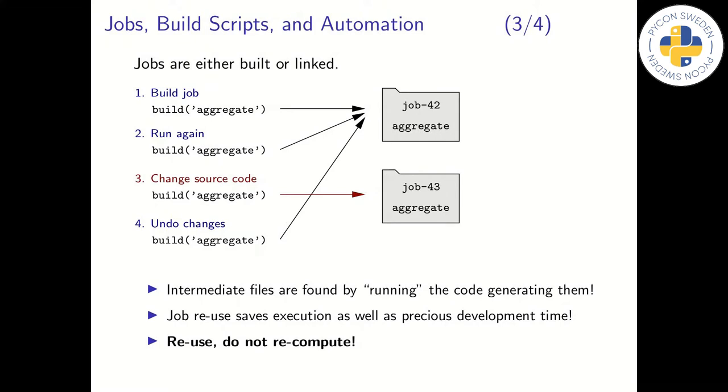More about jobs. Jobs may be reused, and they are either built or linked. Let's look at the four bullets to the left of this slide. In point one, we run a program for the first time. A job directory is created containing source code and the program's output data and files. The accelerator returns a link to the created job directory back to the user.